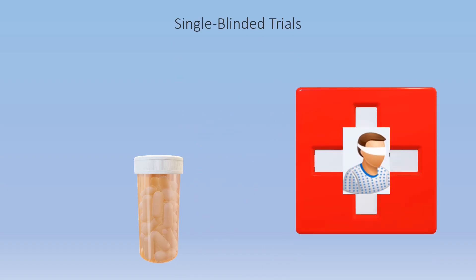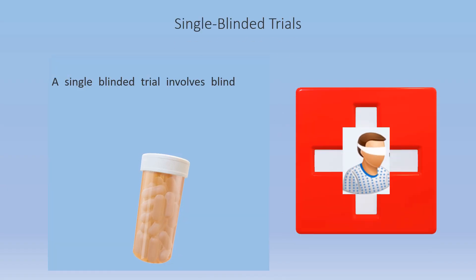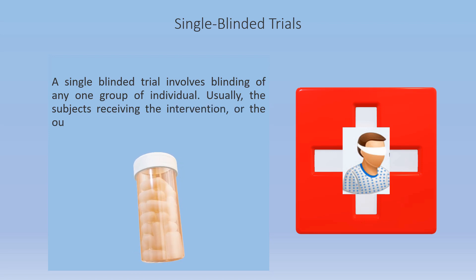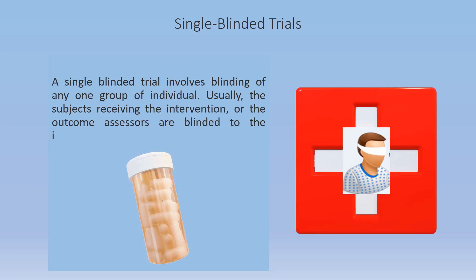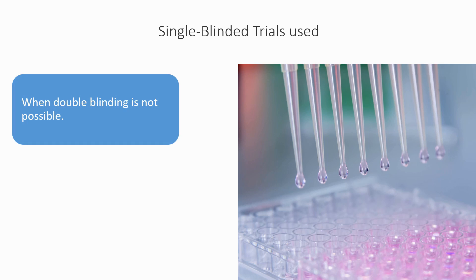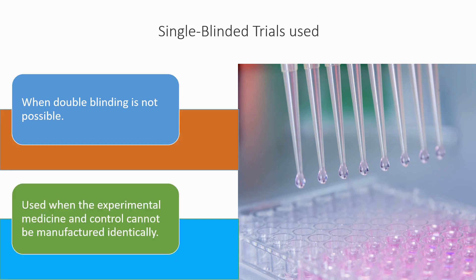A single-blinded trial involves blinding of any one group of individuals — usually the subject receiving the intervention or the outcome assessors are blinded to the intervention assignments. Single-blinded trials are used when double-blinding is not possible, and when the experimental medicine and control cannot be manufactured identically.